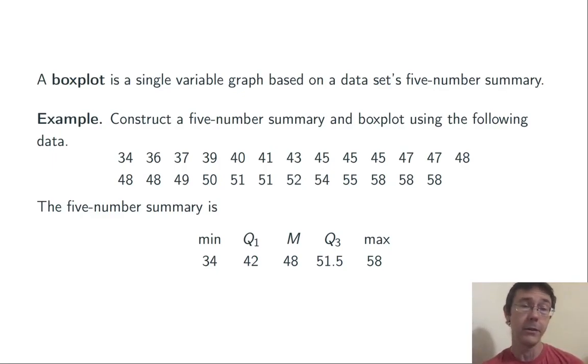Crossing out that value, we get a top half and a bottom half to the data. And we take the medians of those two halves to get the quartiles. The median of the smaller half of the data here is 42, and the median of the larger half of the data here is 51.5.